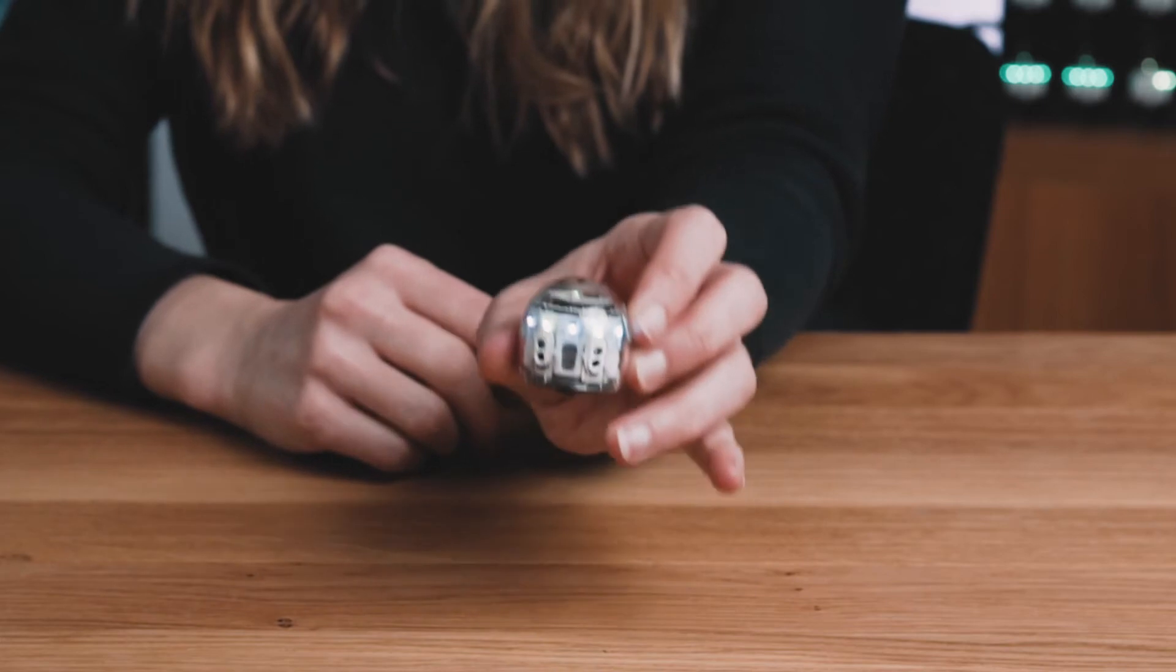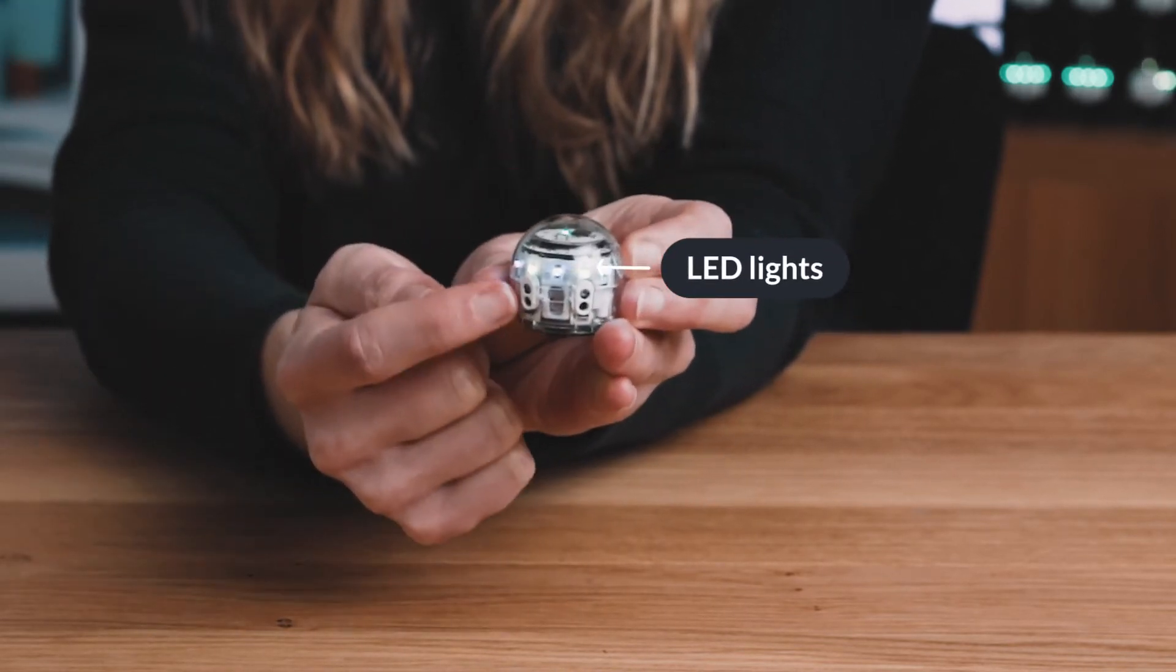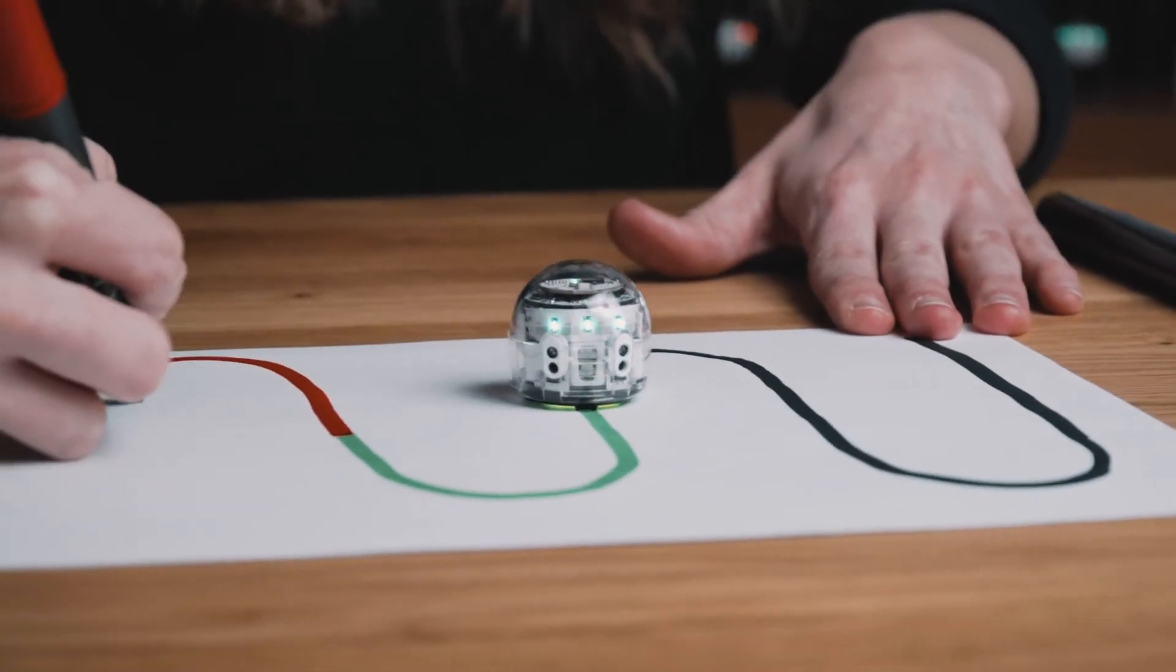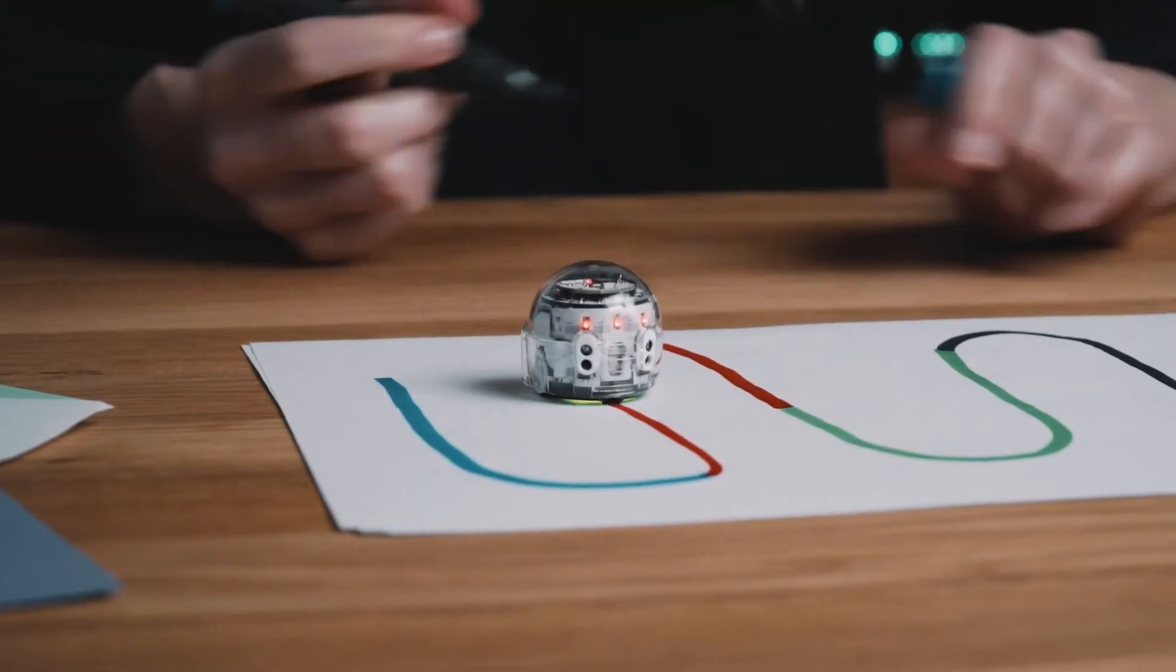You can also program EVO's LED lights. It has one on top and five on the front. When you're programming with color codes, EVO will display the colors it reads with its lights.